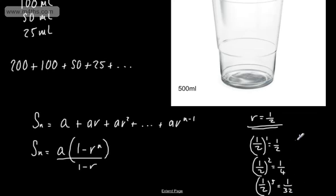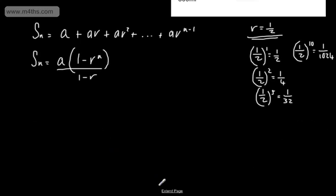So if we take 1/2 to the power of 10 this is going to give us 1/1024. So as this value of n tends to positive infinity this is going to tend to 0.